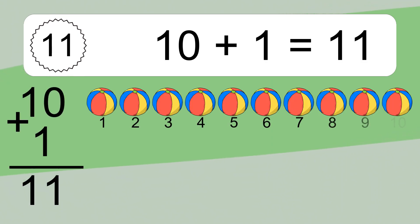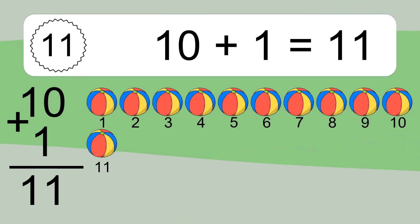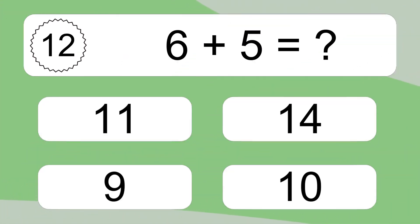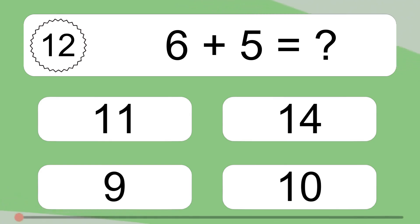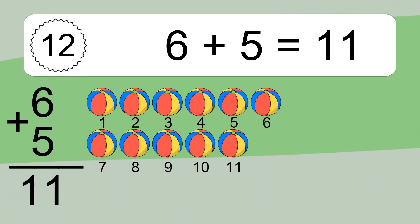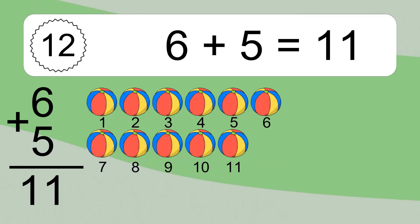10 plus 1 equals what? 10 plus 1 equals 11. Let's count it: 1, 2, 3, 4, 5, 6, 7, 8, 9, 10, 11. 6 plus 5 equals what? 6 plus 5 equals 11. Let's count it: 1, 2, 3, 4, 5, 6, 7, 8, 9, 10, 11.